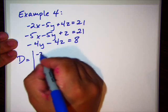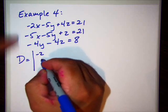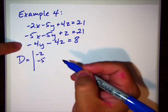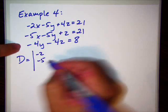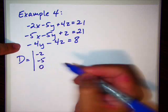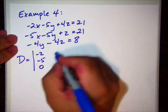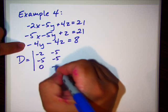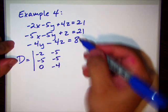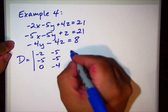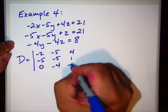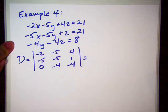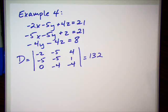All right. But anyway, d is going to be negative 2. I'm using the x column. Negative 5. But in my third equation, there is no x. So, if there is no x, the coefficient is 0. Going to the y column. Negative 5. Negative 5. Negative 4. Be careful. I almost blew that one. And then the z column, 4, 1, negative 4. I didn't find the determinant. Okay. The determinant was 132.